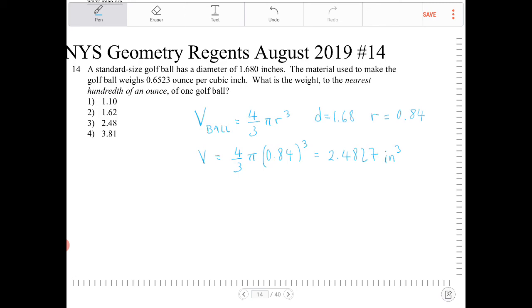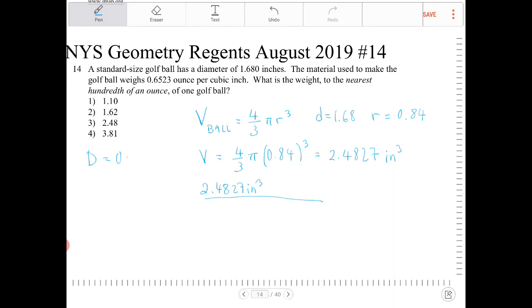So now that I have the volume here, 2.4827 inches cubed, I want to convert this into ounces. So the density that I'm given is 0.6523 ounce per inches cubed.